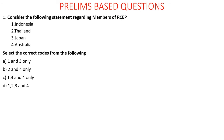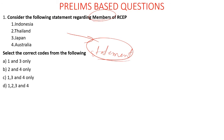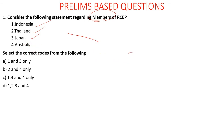Now for a prelims-based practice question: Consider the following statements regarding the members of RCEP — Indonesia, Thailand, Japan, and Australia. The question asks which statements are correct. Since all four — Indonesia, Thailand, Japan, and Australia — are indeed members of RCEP, the answer is option D: all of 1, 2, 3, and 4.